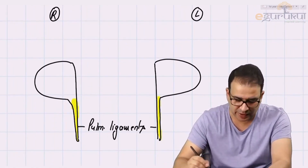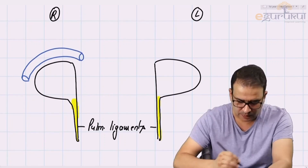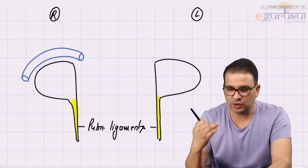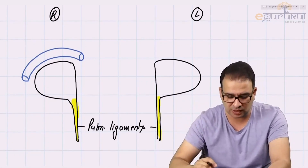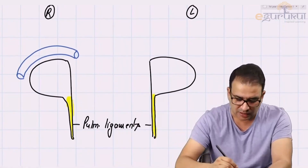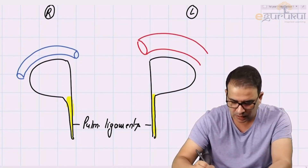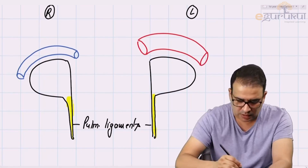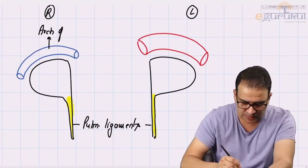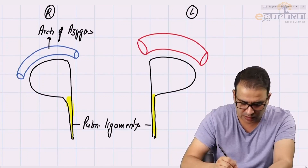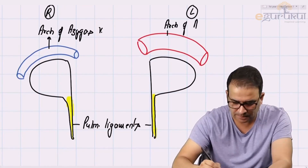The structure present above the right root of lung is the arch of the azygous vein. The azygous vein is on the right side — we know that the azygous vein drains into the superior vena cava. The arch of azygous vein is seen above the right root of the lung, and an important structure present above the left root of the lung is the arch of aorta.